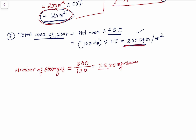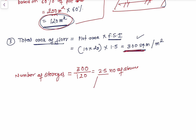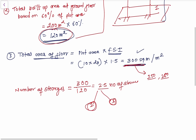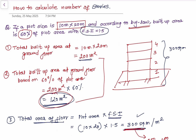Now you might ask how we can consider 2.5 stories. In this situation you can construct two stories with the proper full plot area, or you can construct three stories by reducing the construction area from 300 square meters down to approximately 250 or 280 square meters. I prefer you go for only a two-story building, or a three-story building but reduce your construction area. I hope you liked this video, thanks for watching, bye bye.